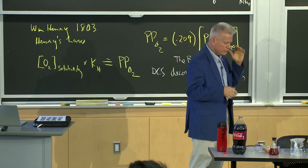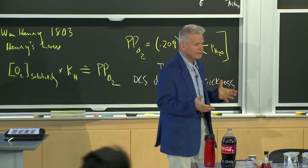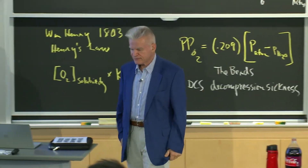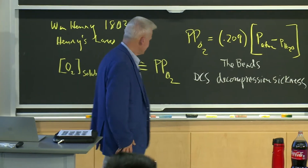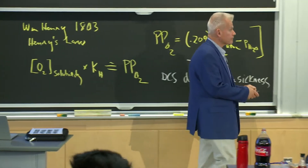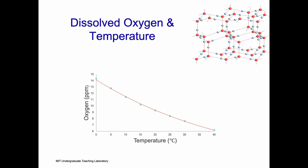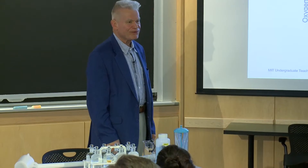What about temperature and dissolved oxygen? Here is a graph of oxygen concentration versus temperature. What stands out? It decreases exponentially with temperature. As the water is warming up, look what's happening to the dissolved oxygen. Why do you think that's happening? And why, when the water is cold, can we hold so much oxygen in that cold water?